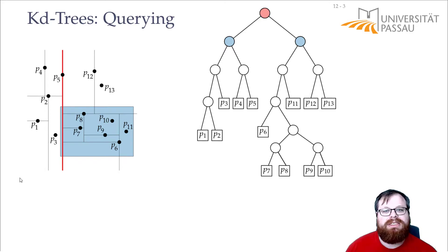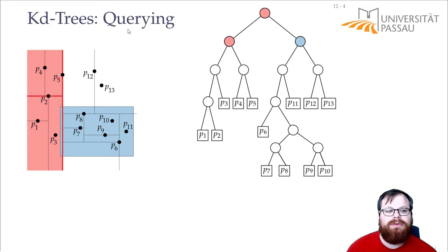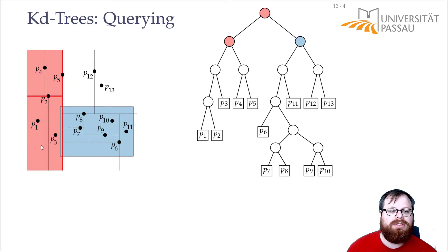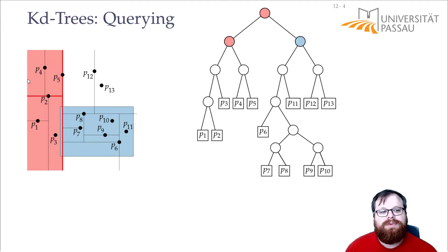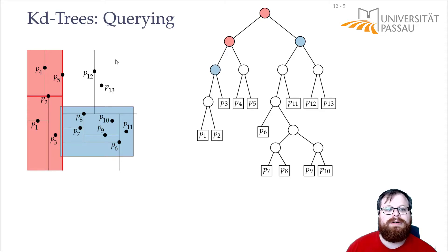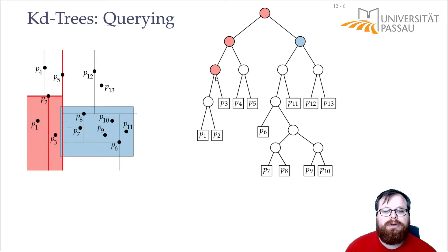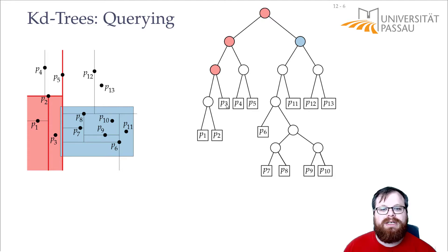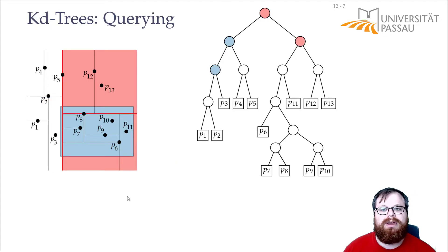On the left side, we want to figure out what part of the query rectangle lies here. The next split line goes into the top and the bottom. There is no part of the query rectangle at the top, so we don't have to continue there — only to the bottom. Then we have a vertical line and nothing is to the left, so we only go to the right. On the right there's a single leaf, so we check whether this point lies in the query rectangle. It does not, so we don't report anything here.